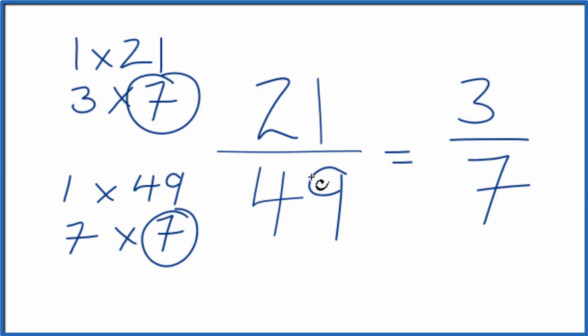If you divide 21 by 49 or 3 by 7, you'll get the same decimal answer. This is Dr. B, simplifying 21/49. The answer, 3/7.